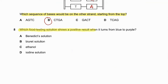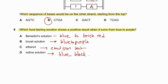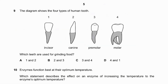Question number eight: which food testing solution shows a positive result when it turns from blue to purple? Biuret solution goes from blue to purple in the presence of protein. Benedict's solution goes from blue to brick red. Ethanol gives an emulsion test with fat. Iodine gives a blue-black colour. So 8B — biuret solution — is the correct answer.